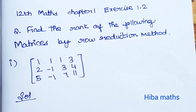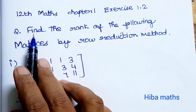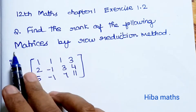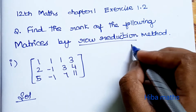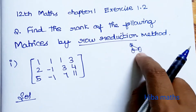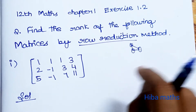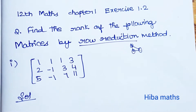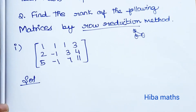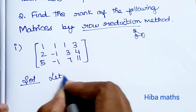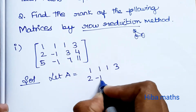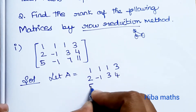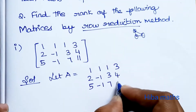Hello students, welcome to Hibamax 12th standard, Chapter 1, Exercise 1.2: Find the rank of the following matrices by row reduction method. Row reduction method is called row echelon form. The rank of the matrix is defined accordingly. Let A equal to question 1: [1 1 1 3; 2 -1 3 4; 5 -1 7 11].